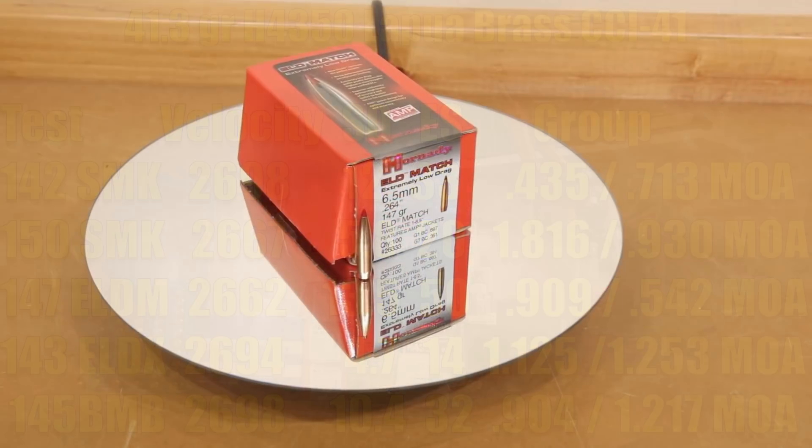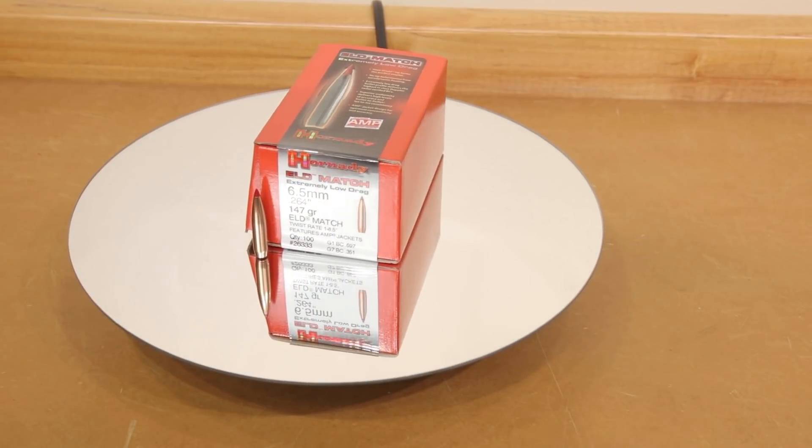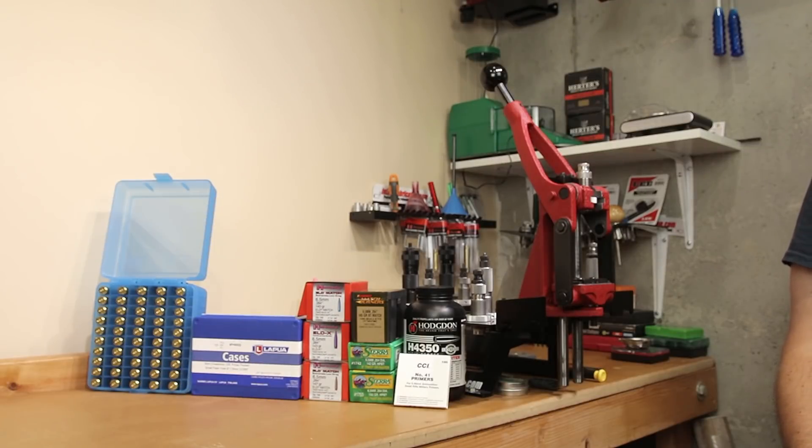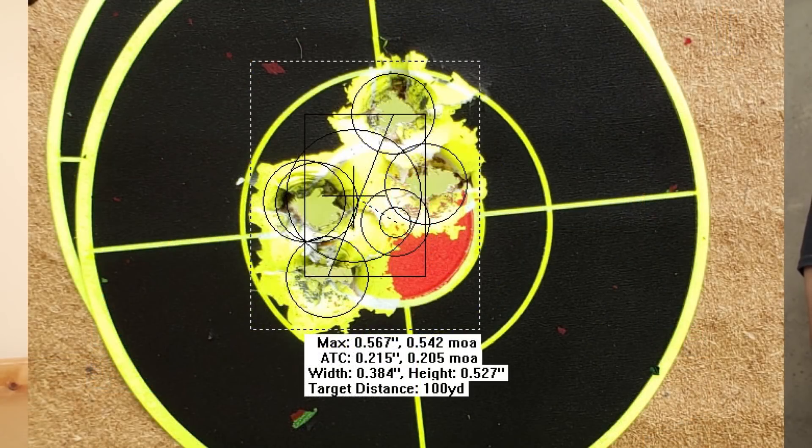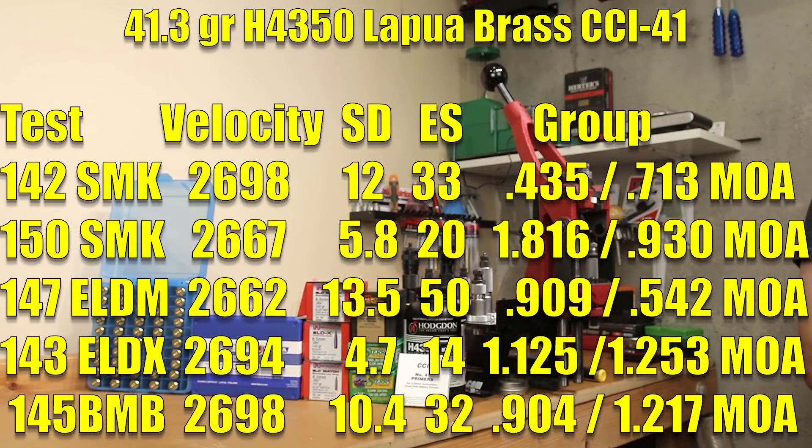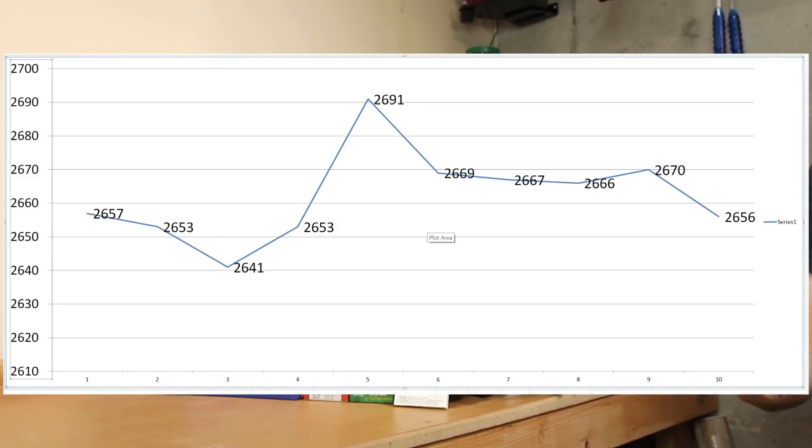Our next projectile is 147-grain ELDM by Hornady, part number 26333. This is one of the projectiles that our other barrel favored pretty well, so we had high hopes and certainly some in stock. At our 2.820-inch cartridge overall length, we're about 53 thousandths off the lands. Our first five shot group was 0.909 MOA, and our second group was 0.542 MOA. All 10 of these rounds yielded an average velocity of 2662 feet per second with a standard deviation of 13.5. With our average velocity of 2662, one of our rounds actually was at 2691 feet per second, which was the one round that really brought our extreme spread up.